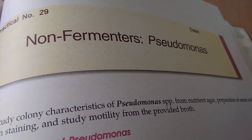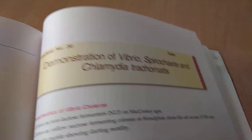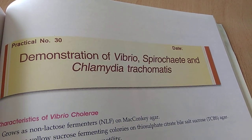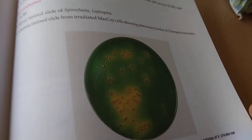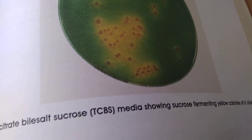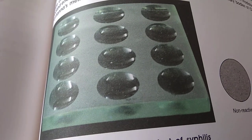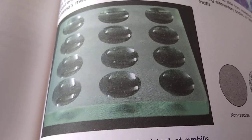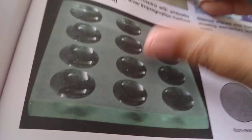Non-fermenters like Pseudomonas — looks interesting in the book. Vibrio. Spirochete and Chlamydia trachomatis — why did they combine Vibrio and Chlamydia trachomatis into one chapter? Guess this media. Thiosulfate citrate bile salt sucrose media — this is for Vibrio cholerae. Very good. This is a tablet kind of thing — VDRL plate used for serological test of syphilis caused by Treponema pallidum.